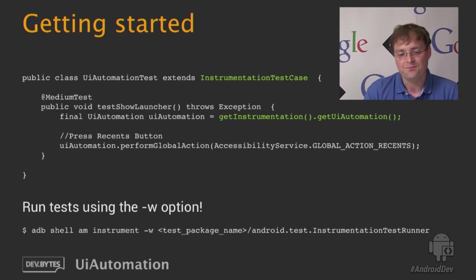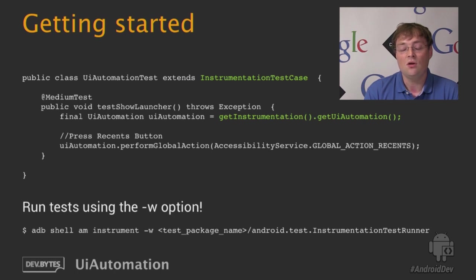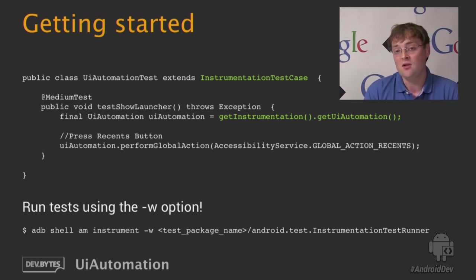So let's have a look at some code. What do you have to do to get started with UI Automation? It's very simple. You just have to inherit from InstrumentationTestCase, or from any other subclass like ActivityInstrumentationTestCase2. Then in your test method, just call getInstrumentation().getUIAutomation() to get a reference to the UI Automation object. To run these tests, you use the adb shell am instrument command with the -w option, your target package, and your test runner.